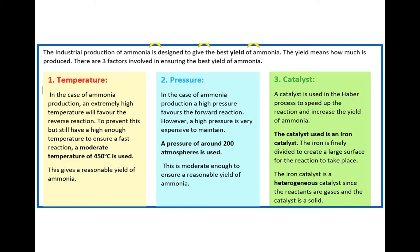In the case of ammonia, a high pressure reaction favours the forward reaction, so high pressure will force nitrogen and hydrogen to react together and form ammonia. However, a high pressure in an industrial setting is very expensive to maintain. So instead we use a pressure of around 200 atmospheres, which is moderate enough to ensure that we have a reasonable yield of ammonia.